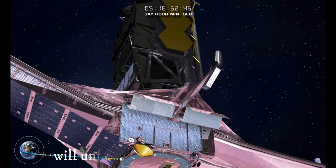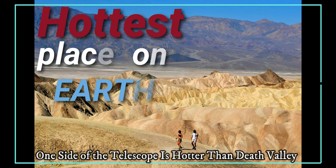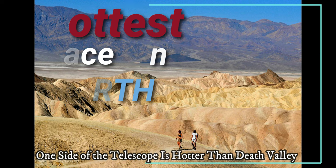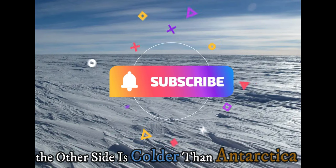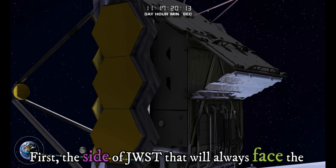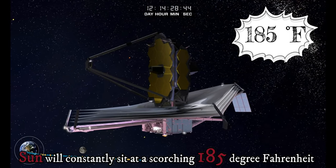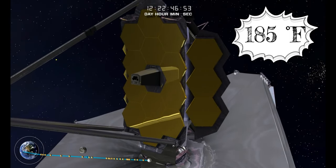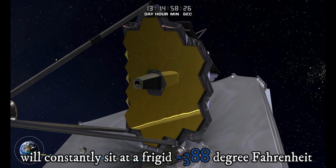One side of the telescope is hotter than Death Valley, the other side is colder than Antarctica. The side of JWST that will always face the sun will constantly sit at a scorching 185 degree Fahrenheit. However, the other side containing the mirrors and instruments will constantly sit at a frigid minus 388 degree Fahrenheit.